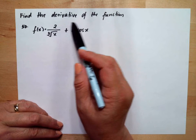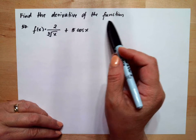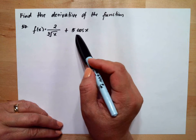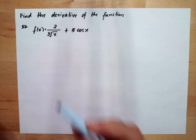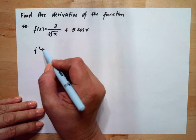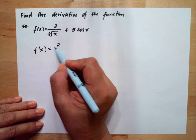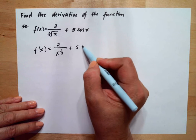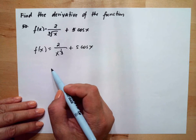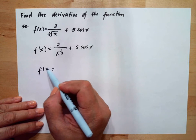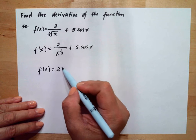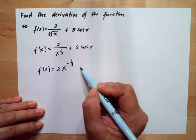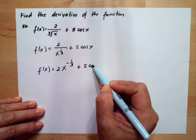Find the derivative of the function: f(x) = 2 over the cube root of x plus 5 cosine x. We will rewrite this as 2 over x to the one-third plus 5 cosine x, which can be written as 2 times x to the negative one-third plus 5 cosine x.